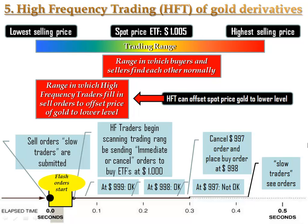But when you have supercomputers at your disposal that run scripts enabling them to process this data and place buy and sell orders within the range of 30 milliseconds, you can engage in front running. Using immediate-or-cancel orders, supercomputers can scan the trading range and detect what the lowest price in the market is that ETFs are being sold for. Within 30 milliseconds these computers can place buy orders aimed at the lowest selling offer.